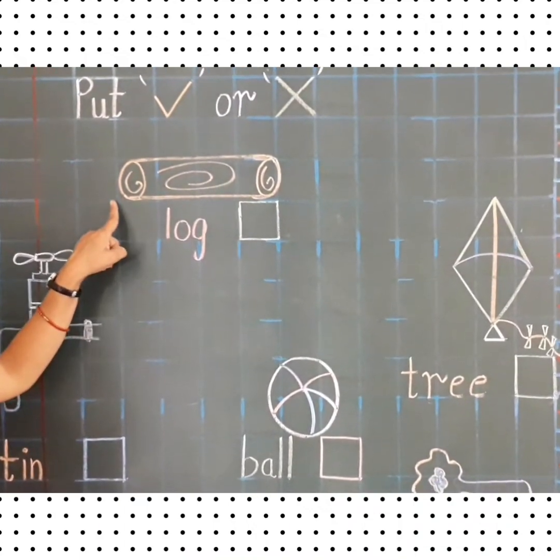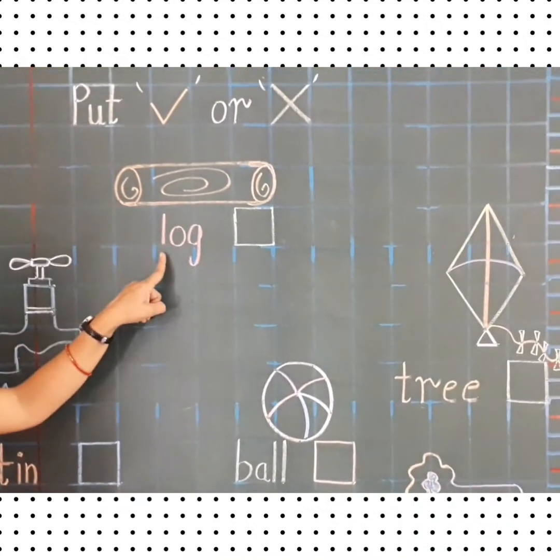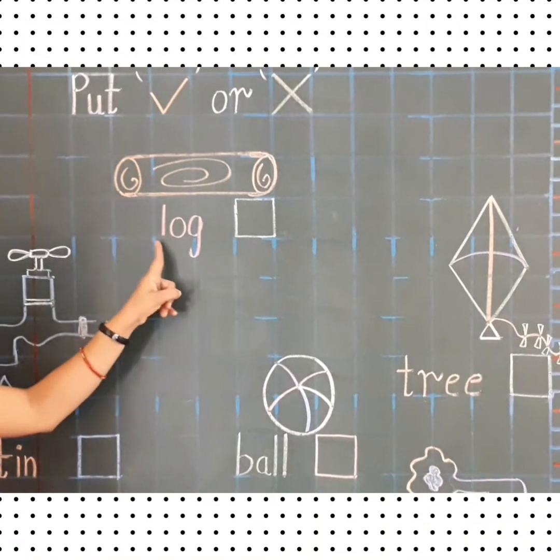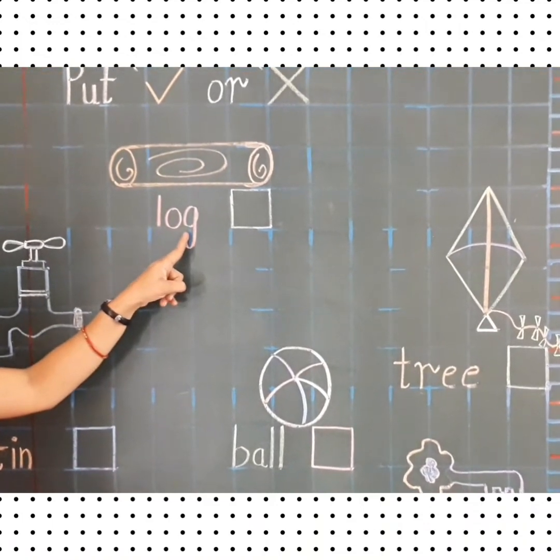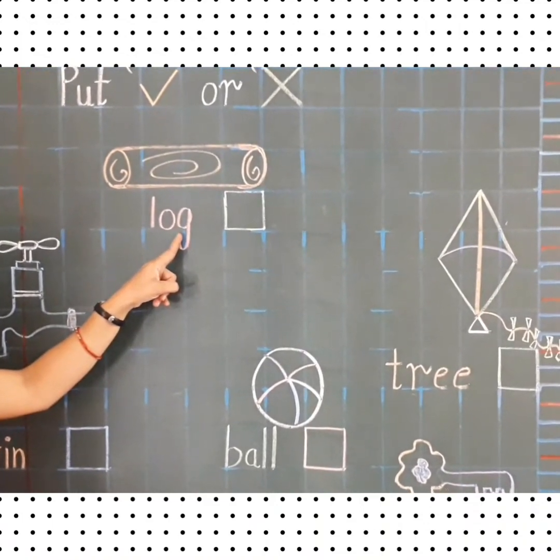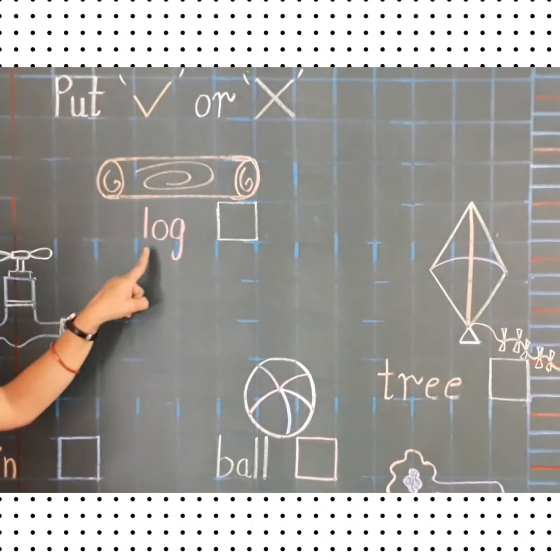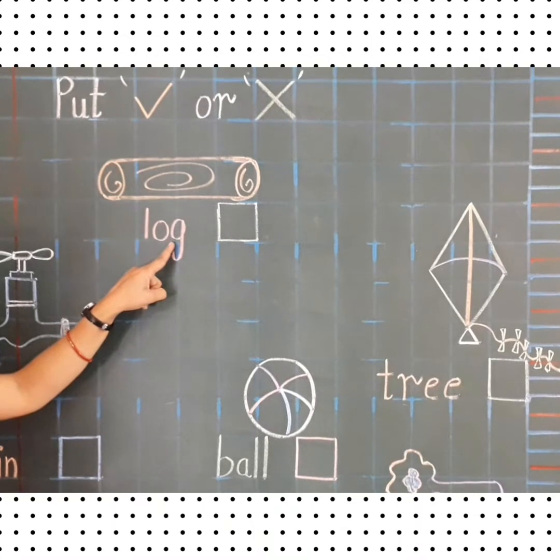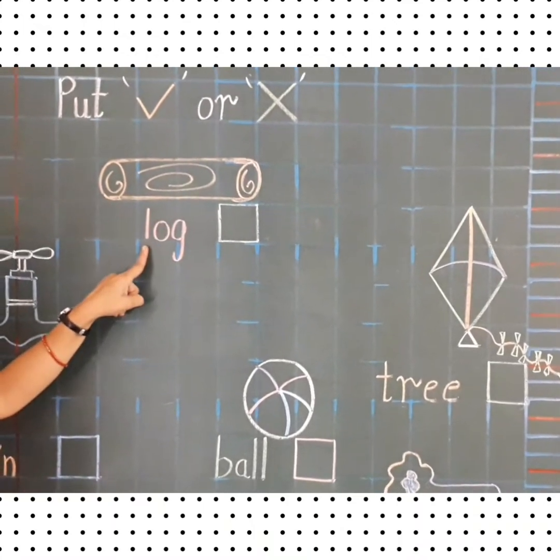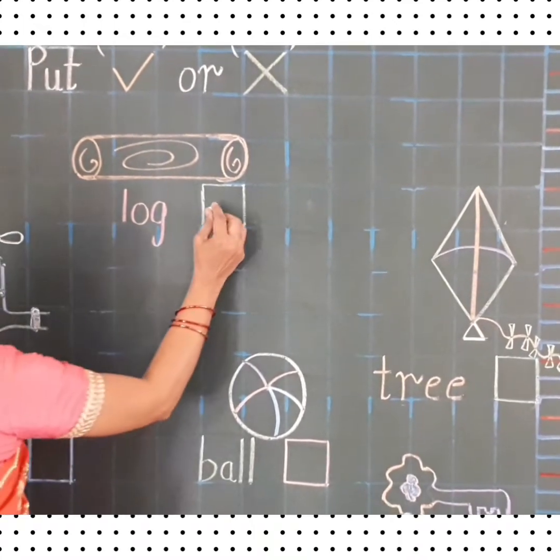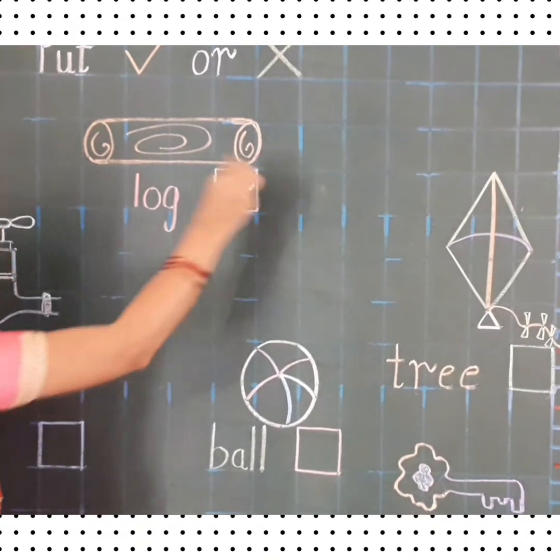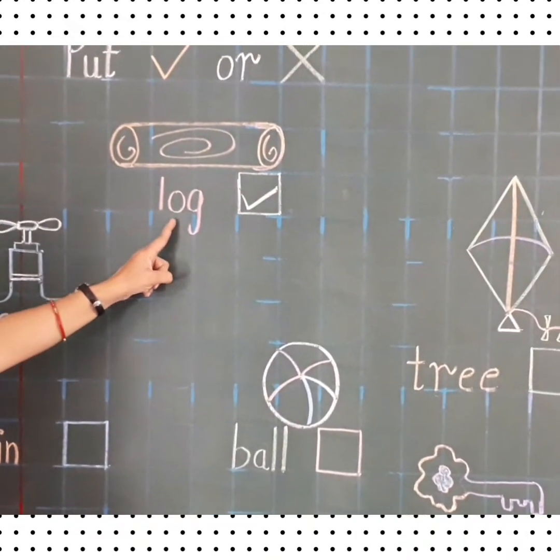So let's see. See, this is a picture of a log. Now let's read the spelling first. L-O-G log. Now can you tell me what is the spelling of log? L-O-G log. So here also, L-O-G log is written. So this is the correct spelling. So what we have to do? We will put tick in this box. L-O-G log.